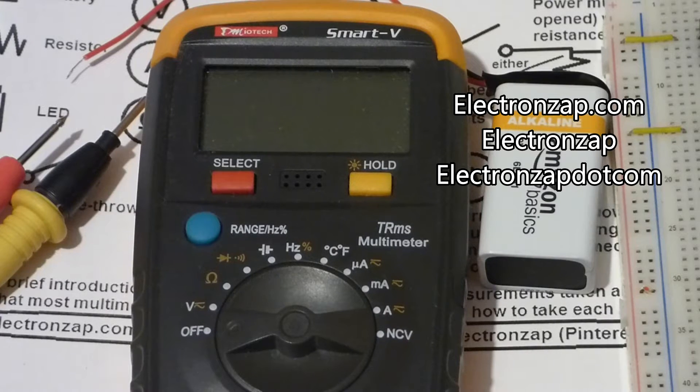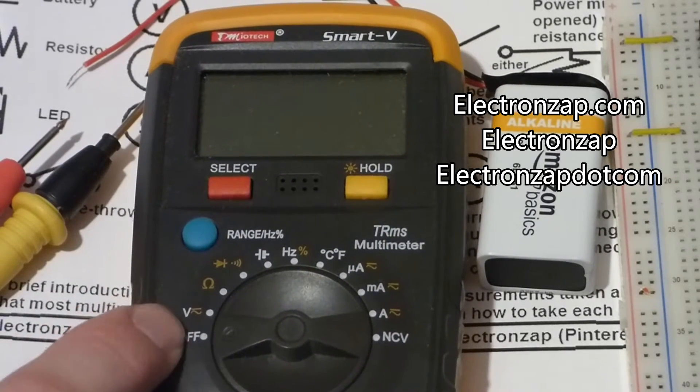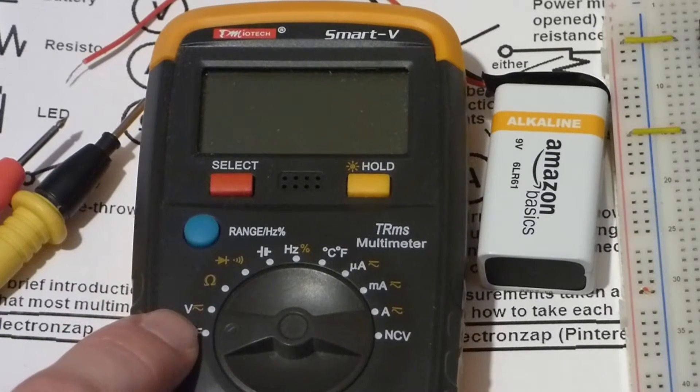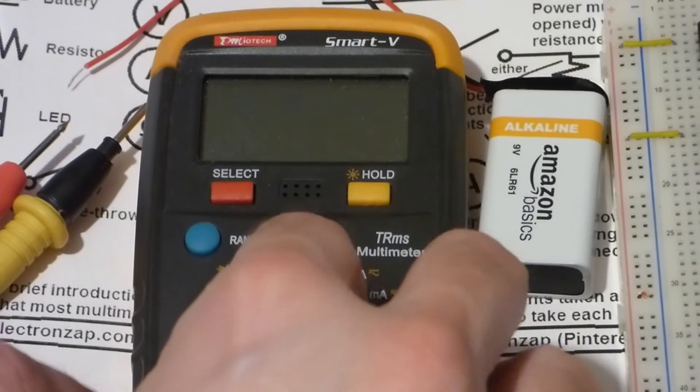Knowing the amount of voltage in a circuit is very important, and a great tool for looking up the voltage is the multimeter. Now this multimeter is an auto-ranging meter. All I have to do is set it here to voltage and it does the rest.